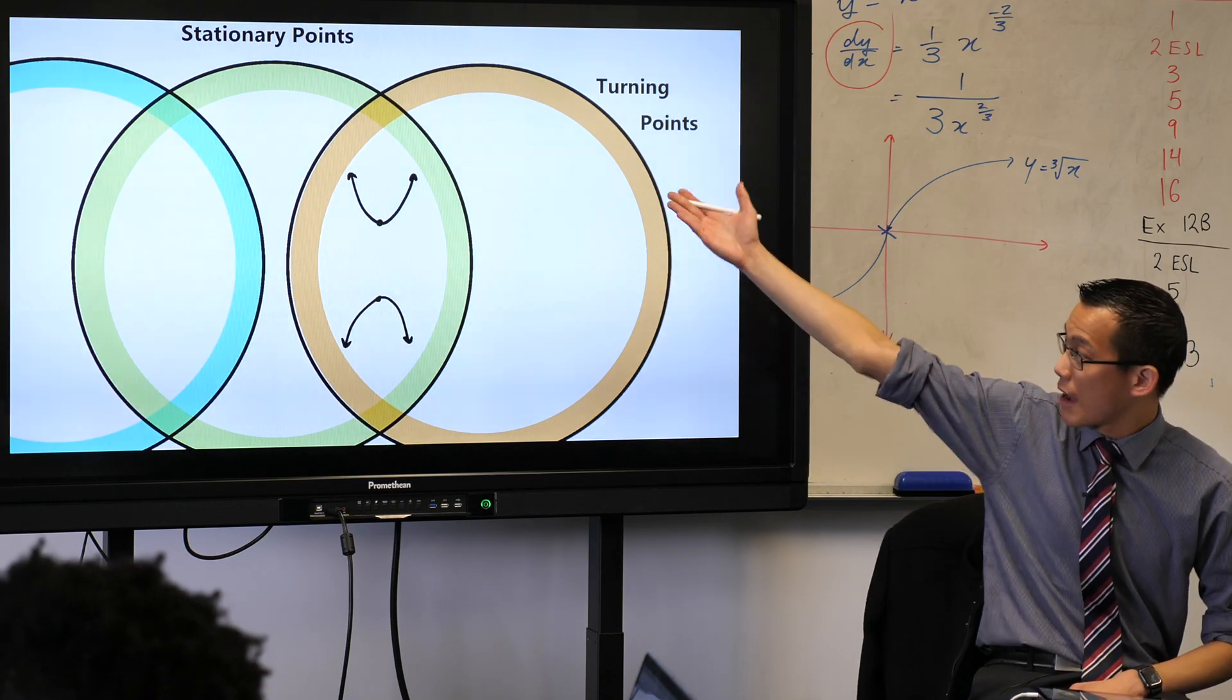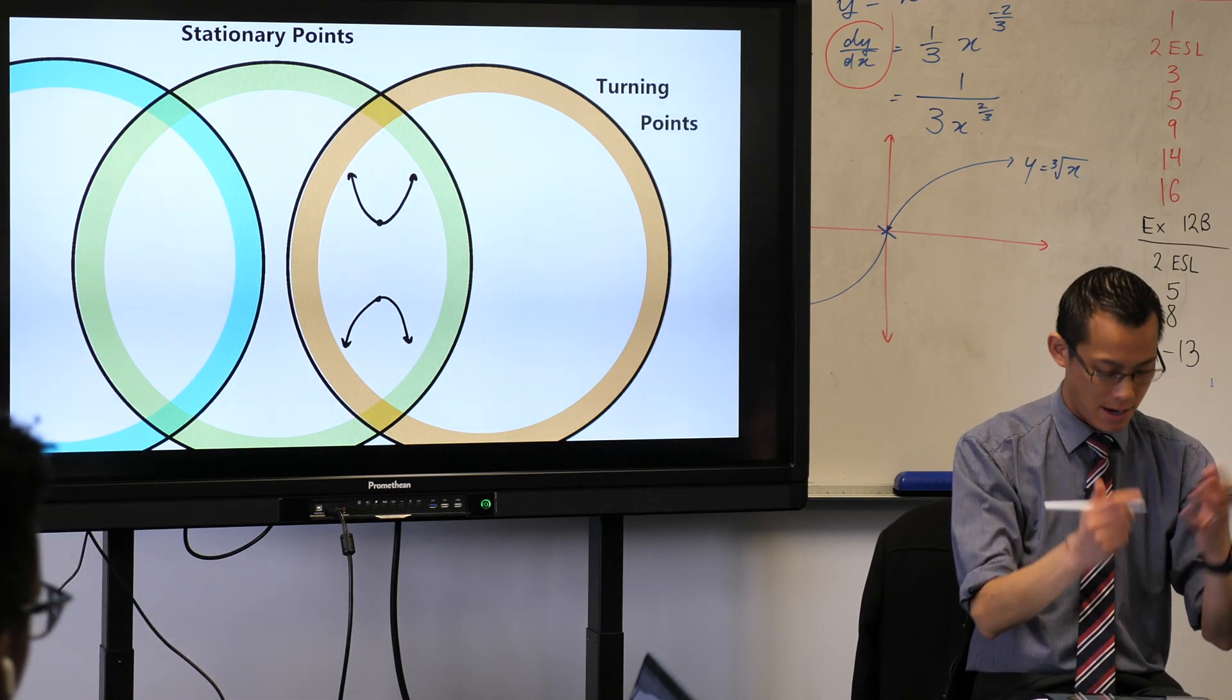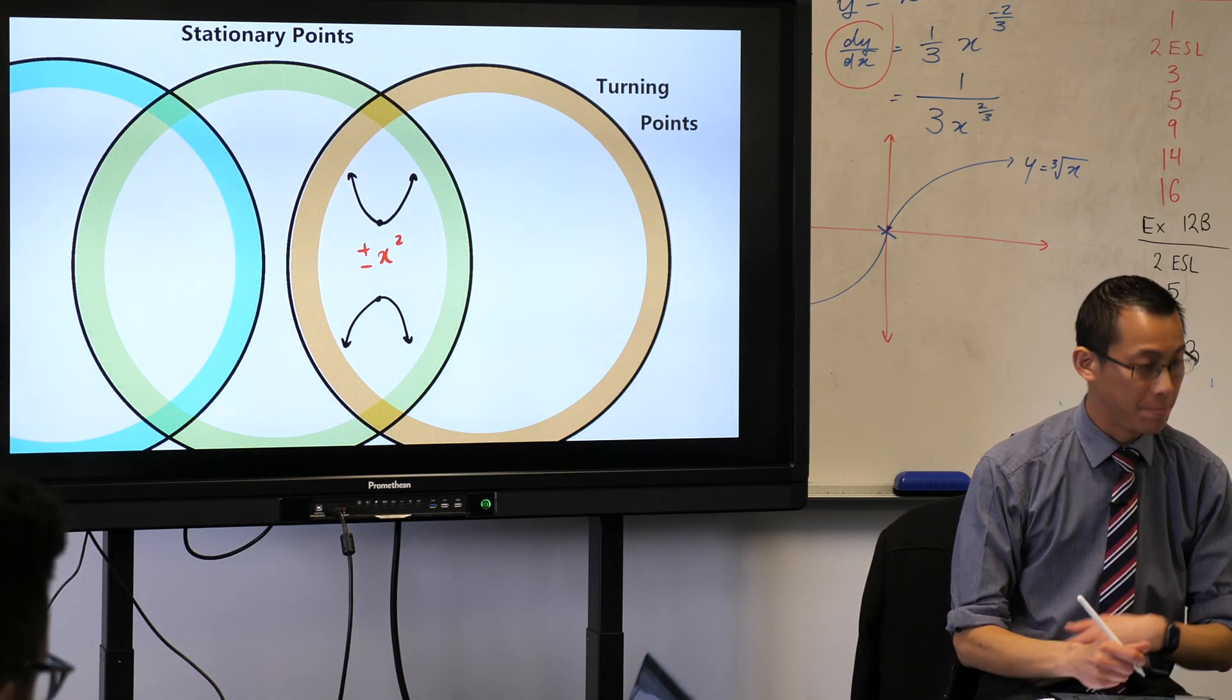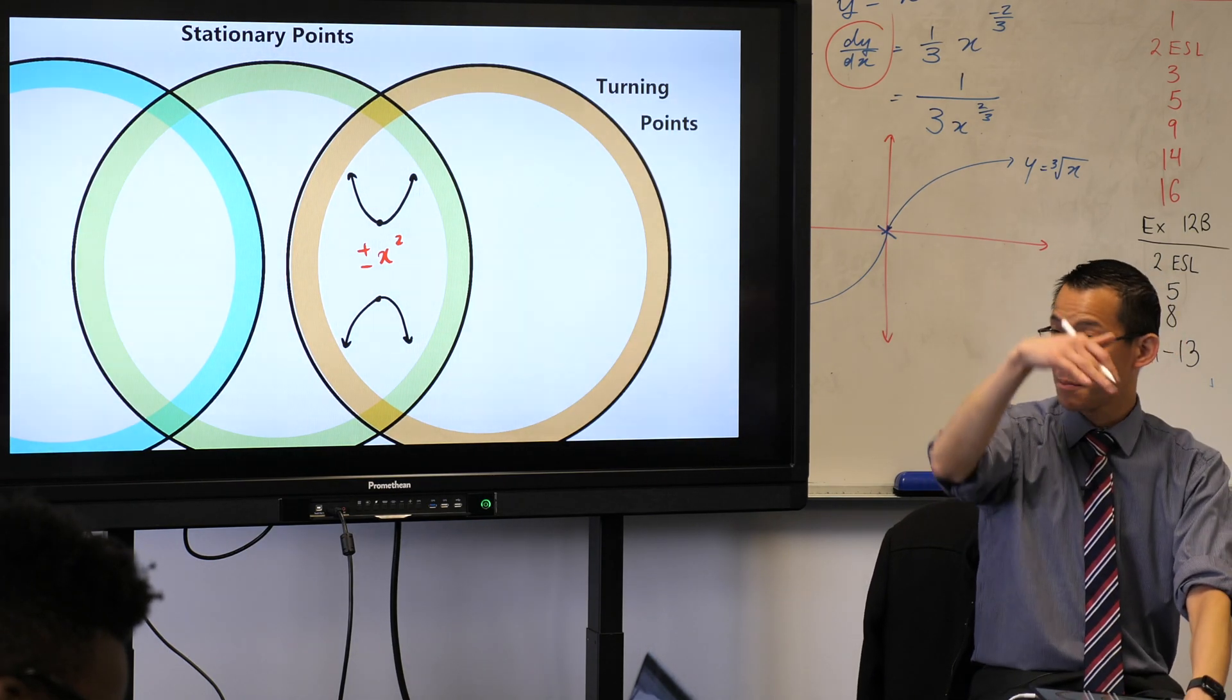So these graphs here, they look like parabolas. So just as an example, plus or minus x squared, these give you stationary points where things turn around. Does that make sense?